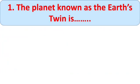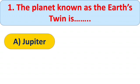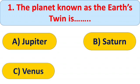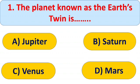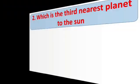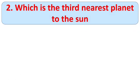Your first question is: the planet known as the Earth's twin is — options: A) Jupiter, B) Saturn, C) Venus, and D) Mars. Think about the answer. The right answer is C) Venus. Venus is like the Earth in size and mass, and because of it, it is known as Earth's twin.